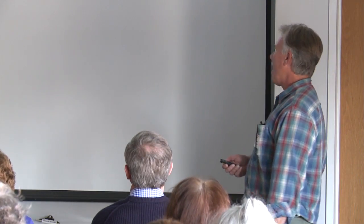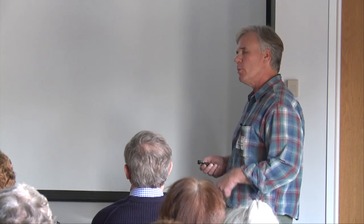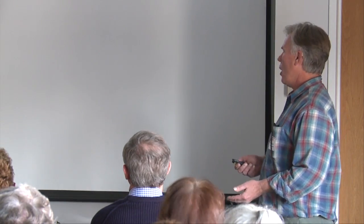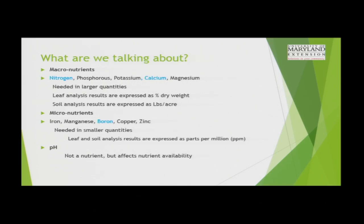The micronutrients we're mostly interested in are iron, manganese, boron, copper, and zinc. They're needed in smaller quantities, and normally the soil and leaf analysis results are given in parts per million. The reason for this is because you're looking at the results as a whole number — it's not a decimal like .0001 percentage, which is about what they would be if presented as a percentage. It makes it easier to look at and understand what those numbers mean when it's a whole number.